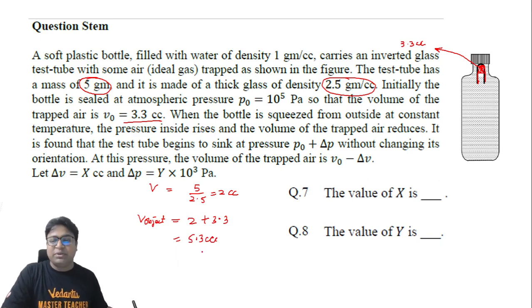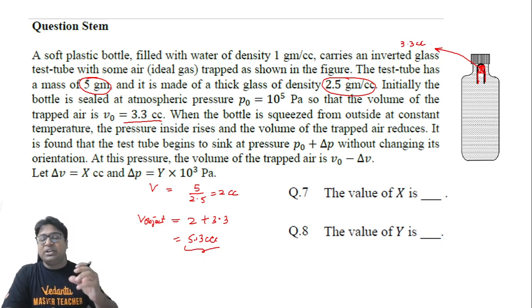That means the buoyant force that will act on such an object will be equal to the 5.3 grams of water, because the density of water is given to be 1 gram per cc. So the buoyant force will be equal to weight which is due to 5.3 grams of water. But we only need 5 grams weight of buoyant force, not more than that.